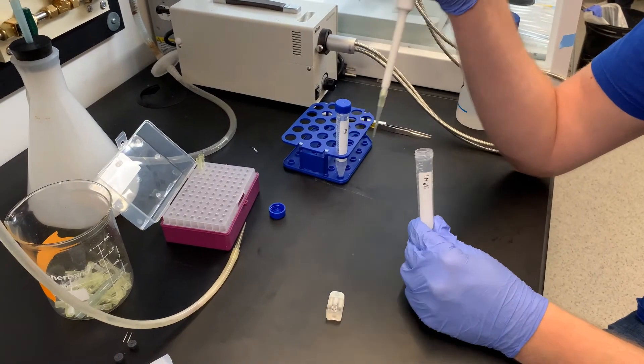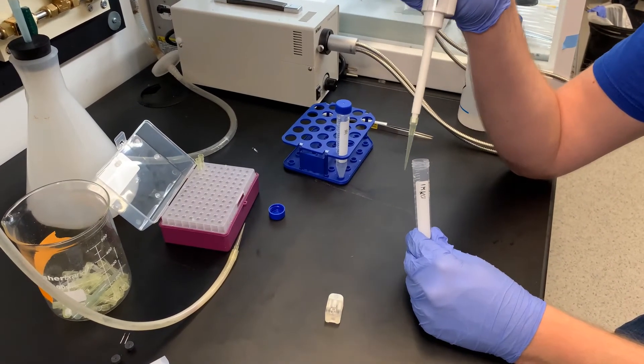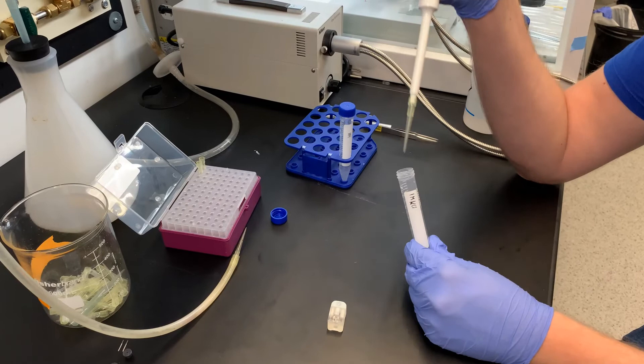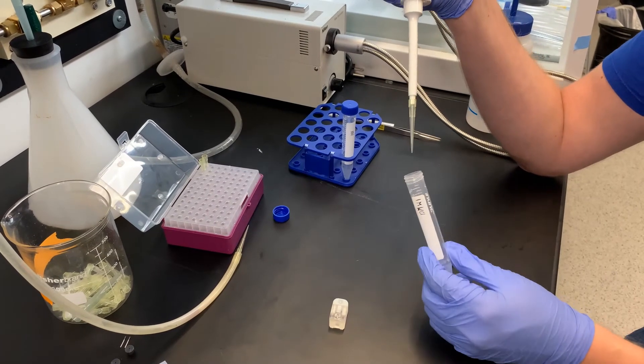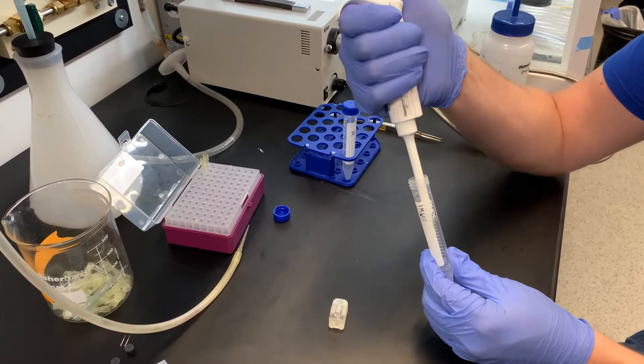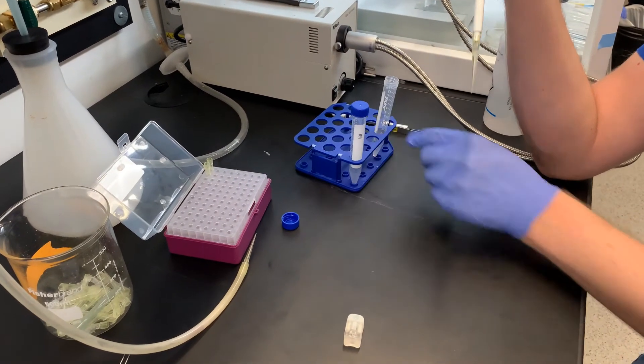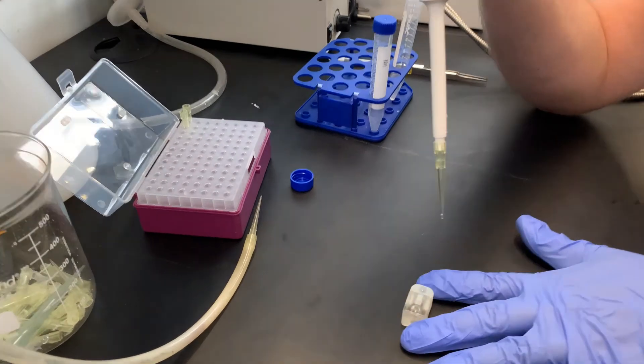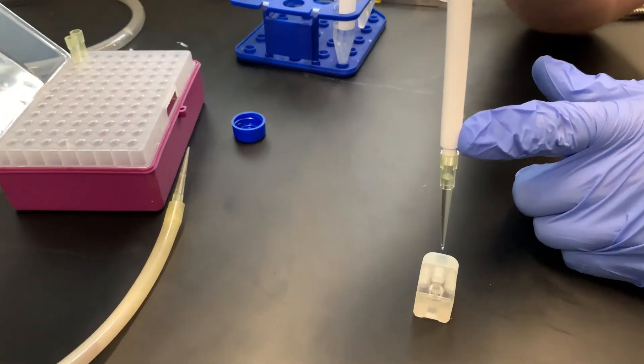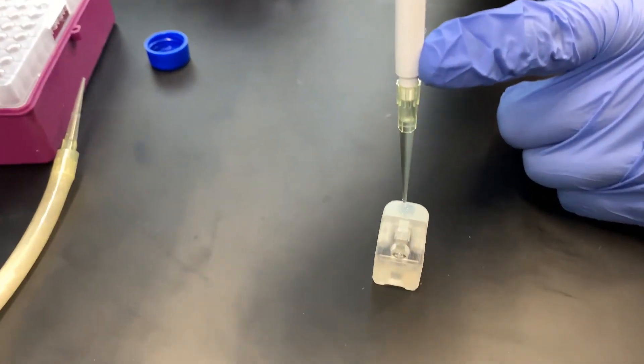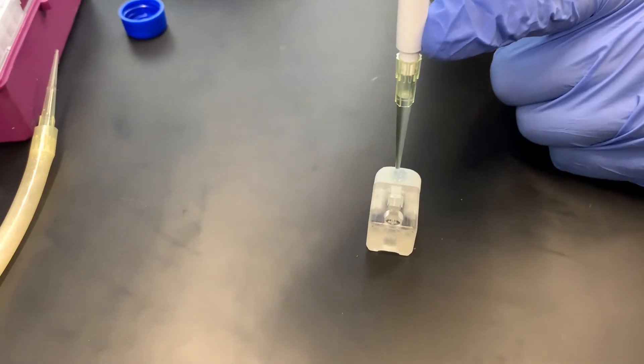Because there's fluid already in my cell, I want to make sure that I don't inject any new bubbles. I'm going to do this by first taking 200 microliters of KCL and I'll eject some of the solution even before reaching the fluid to make sure that I don't inject any bubbles.